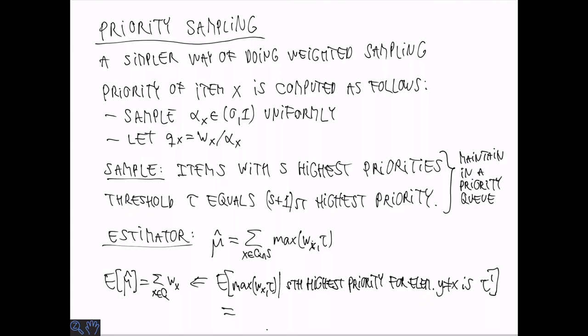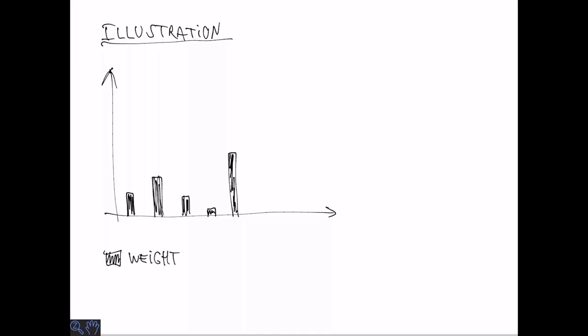And even something stronger is true. Namely that the expected value of mu hat given a particular value of tau is equal to wi. The full proof is in the book, but let me illustrate why this is true.